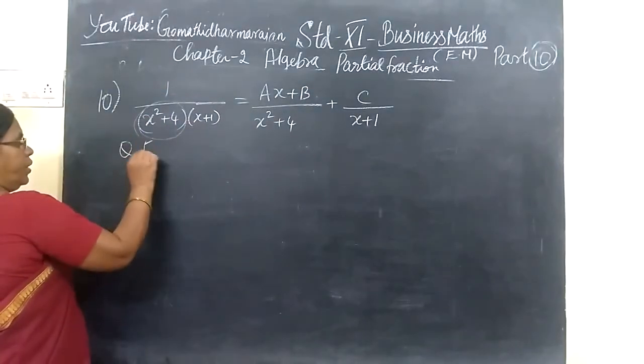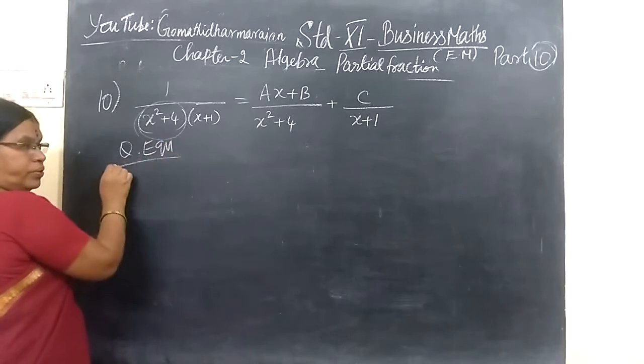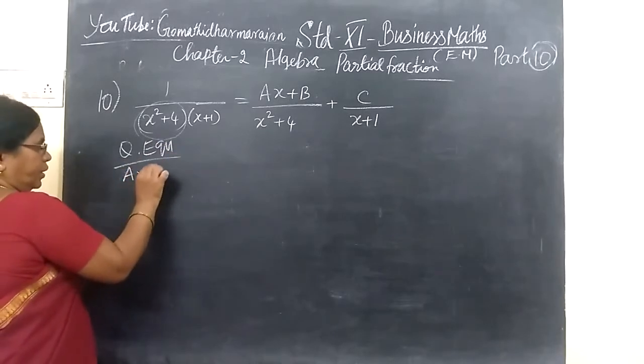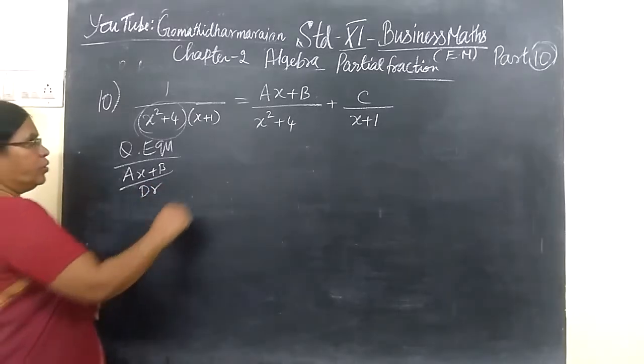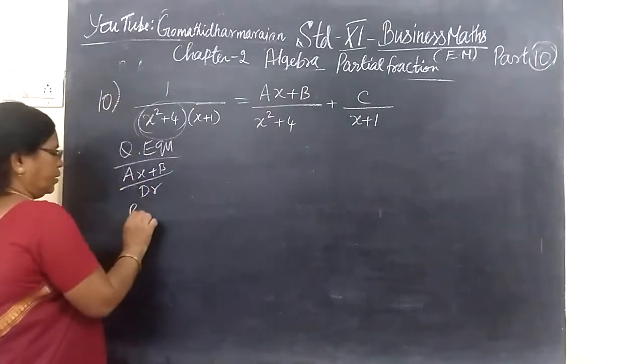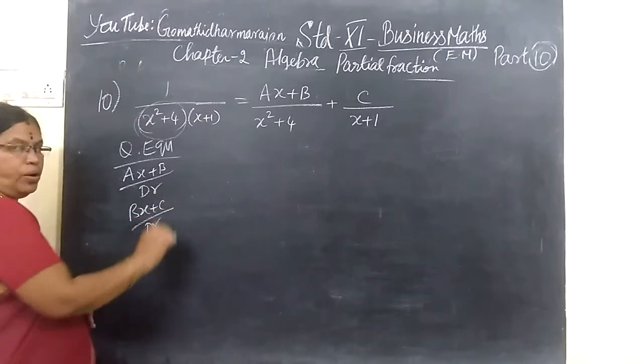Type 3 is a quadratic equation. In a quadratic equation, you have to write AS plus B over the denominator, or you can write BS plus C over the denominator.